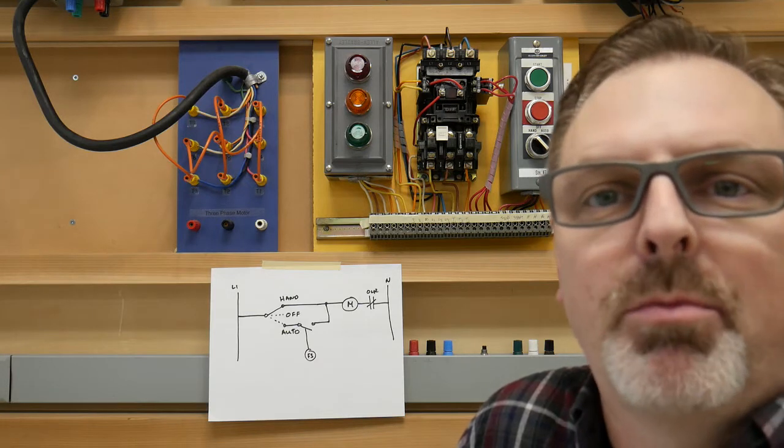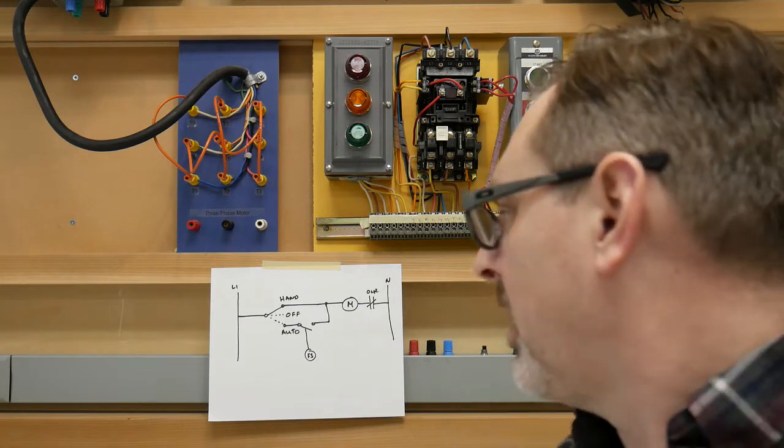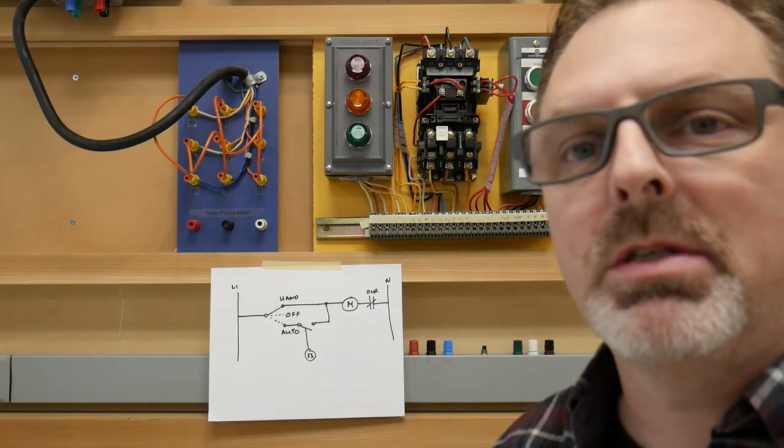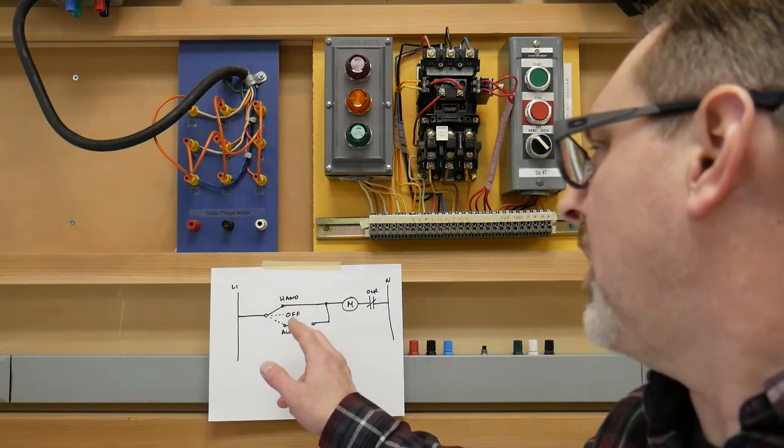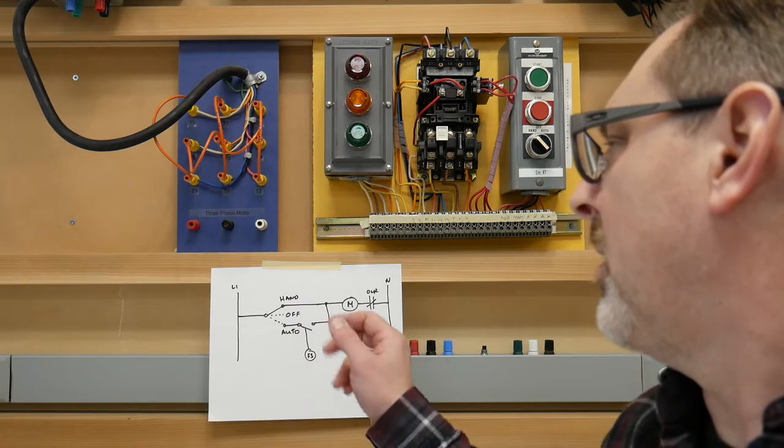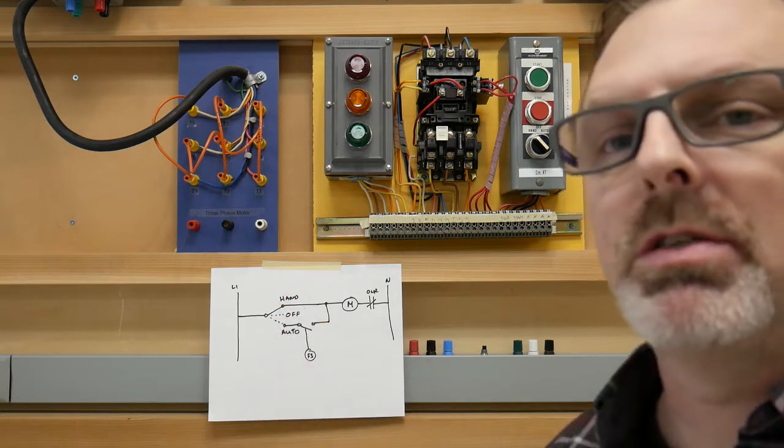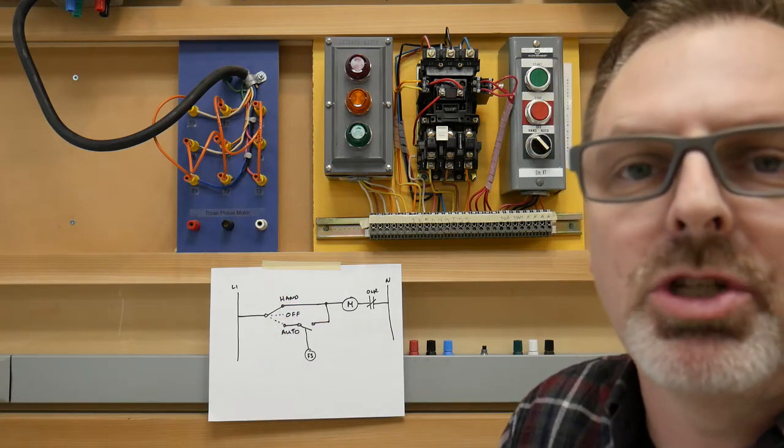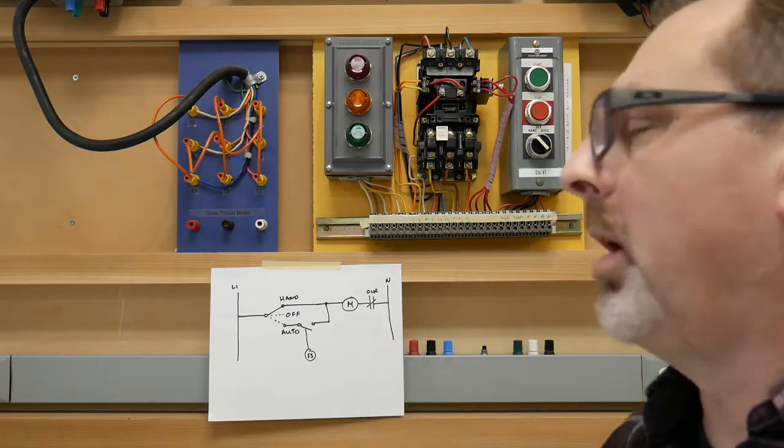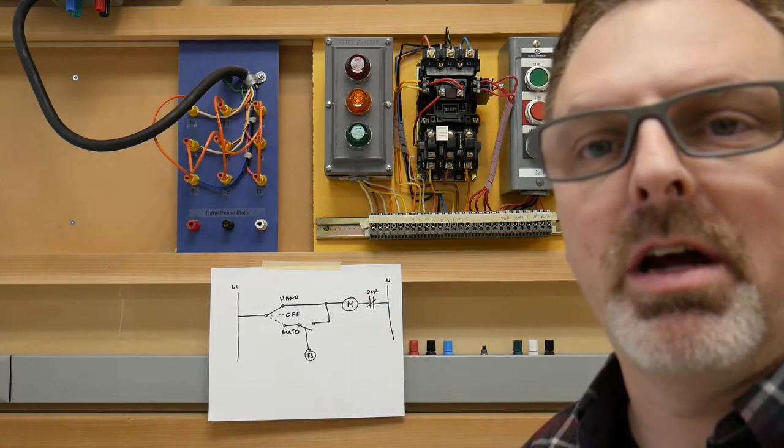We can utilize a float switch for that purpose, and then if we wanted to pump the pump manually we could turn the selector switch to the hand position and that would then allow the pump to run as long as we had that switch in that scenario.